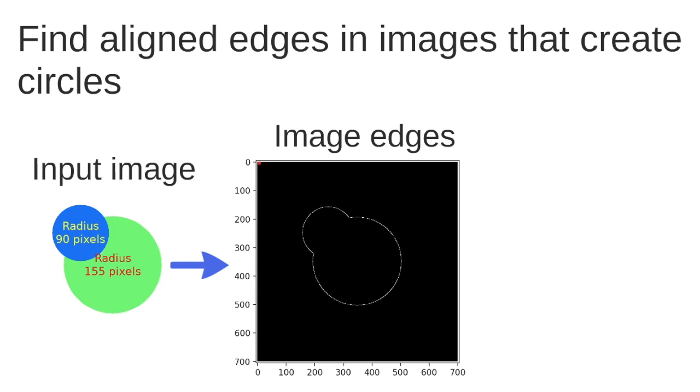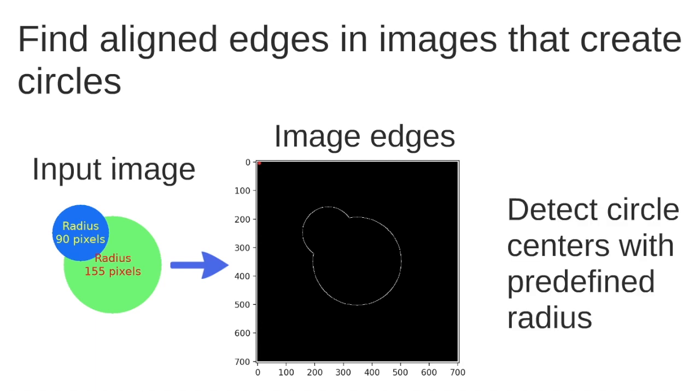And the Circle Hough Transform works in these image edges. Then the algorithm will detect circle centers with a pre-defined radius. This is very important because if we pre-define the radius as 155 then the Hough Transform will find this center and will not find this center here. We have to make the Hough Transform for every different radius.